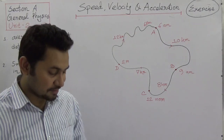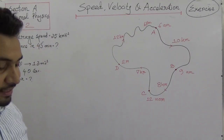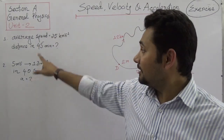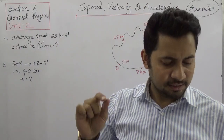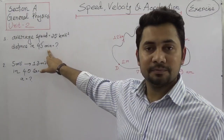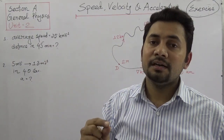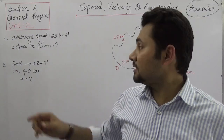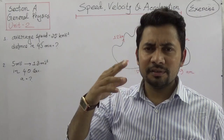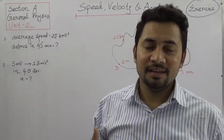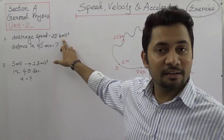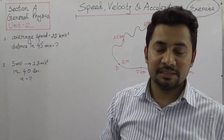So the first question is given. The average speed of a car is 35 km per hour. How far can it travel in 45 minutes? So if the average speed of a car is given, we need to measure how much it will travel in 45 minutes. There is some unit conversion we know we need to do — the standard unit of velocity and speed is meters per second, but since it's given in kilometers per hour, we need to convert it.